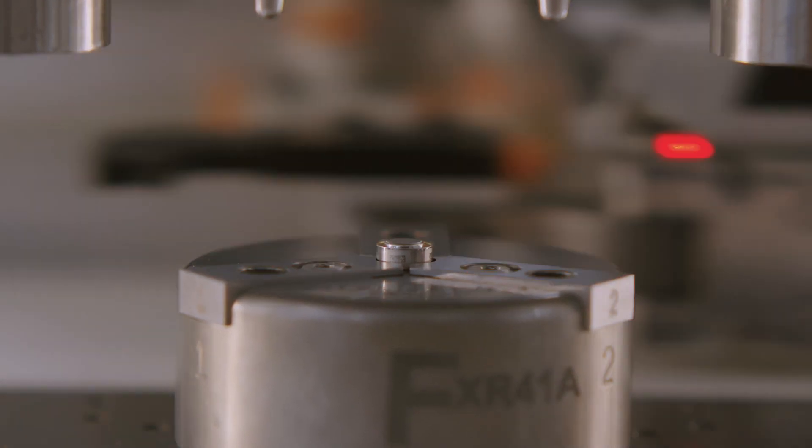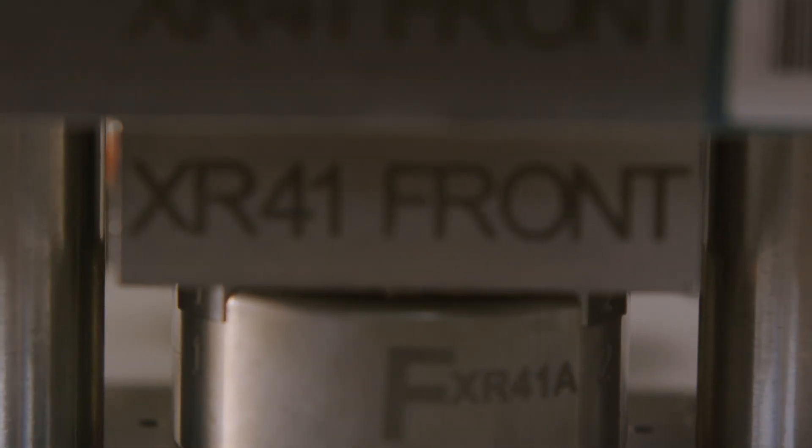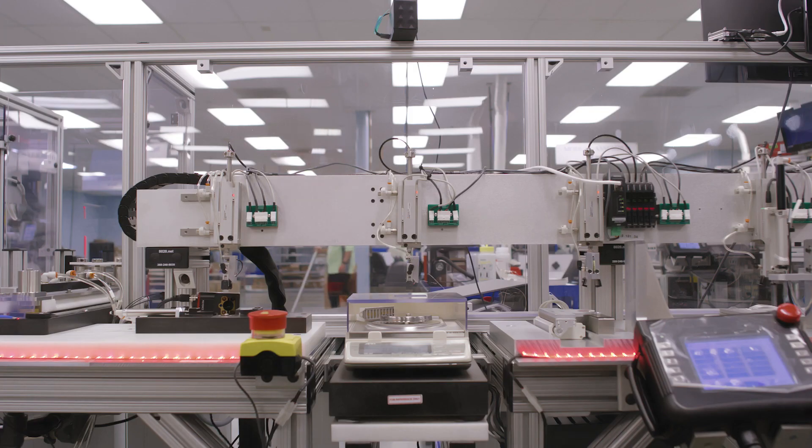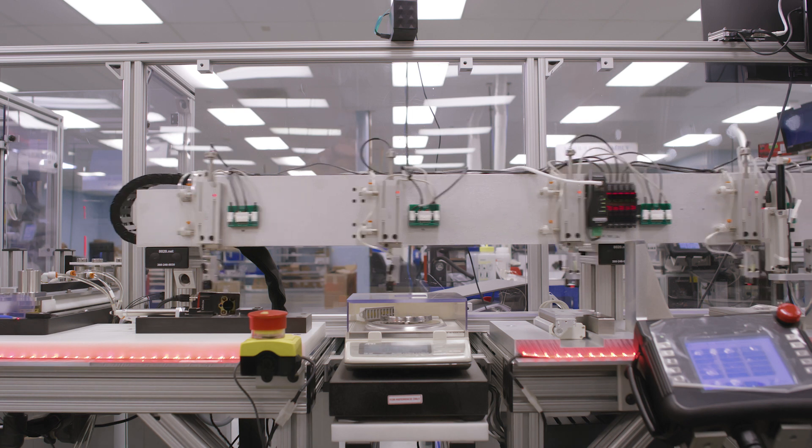Next, at the crimp station, the can material is crimped and sealed. The battery is now fully assembled. The fully charged cell moves to the annex where the voltage, height, weight, barcode, and lot number are read and stored.